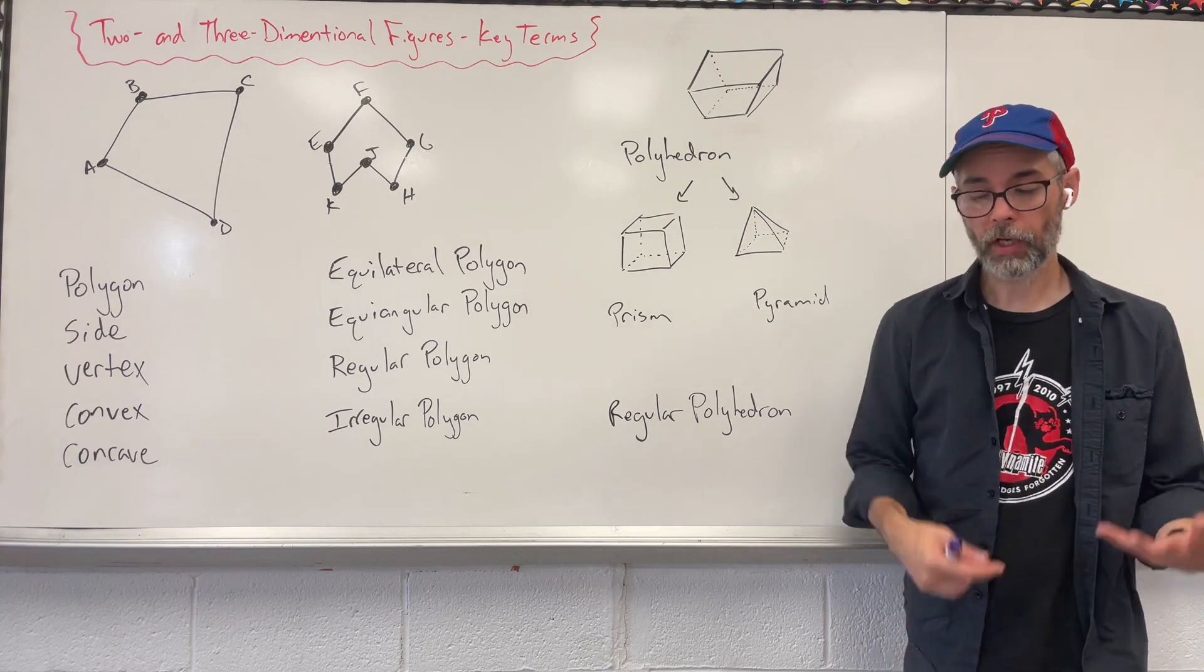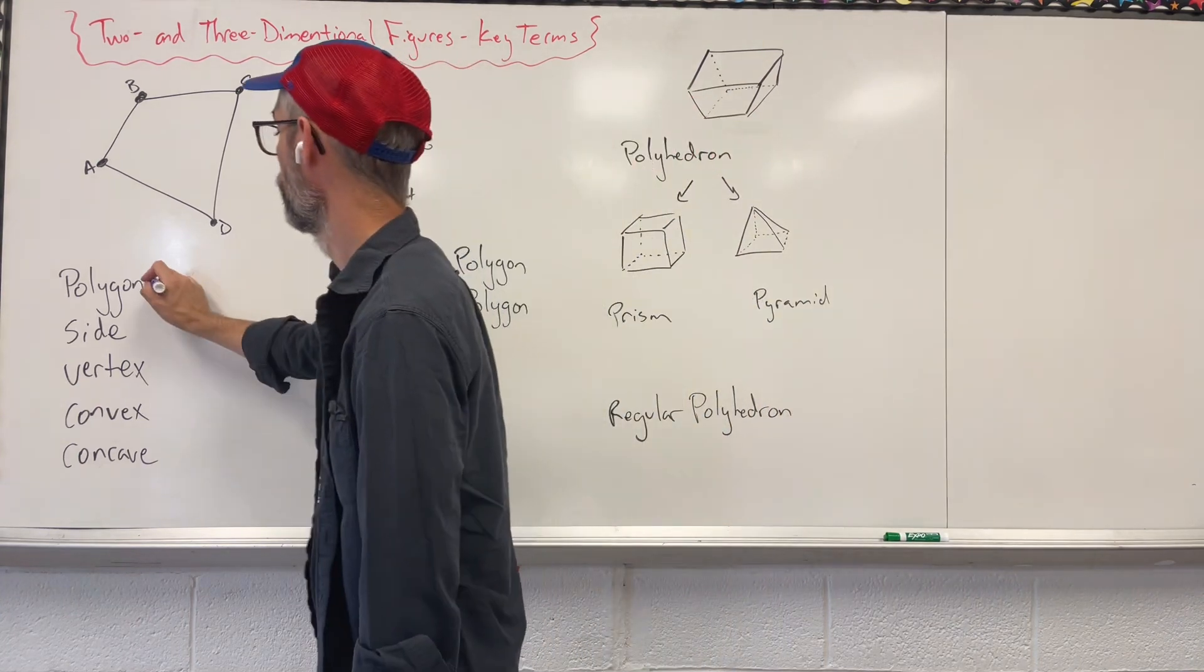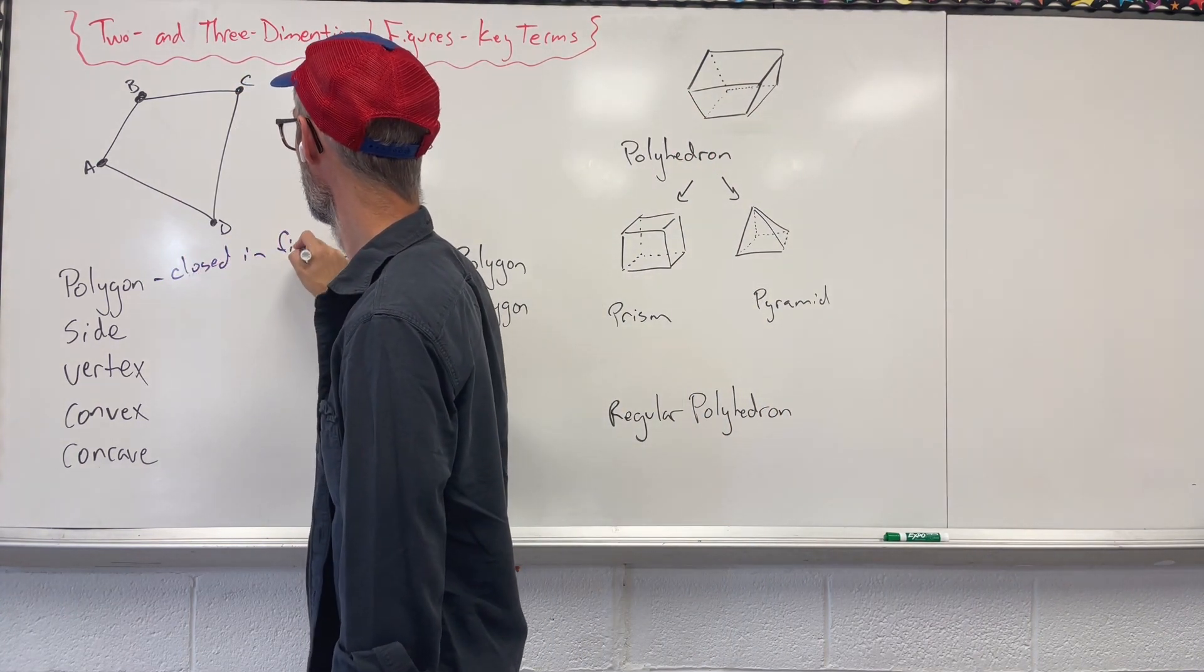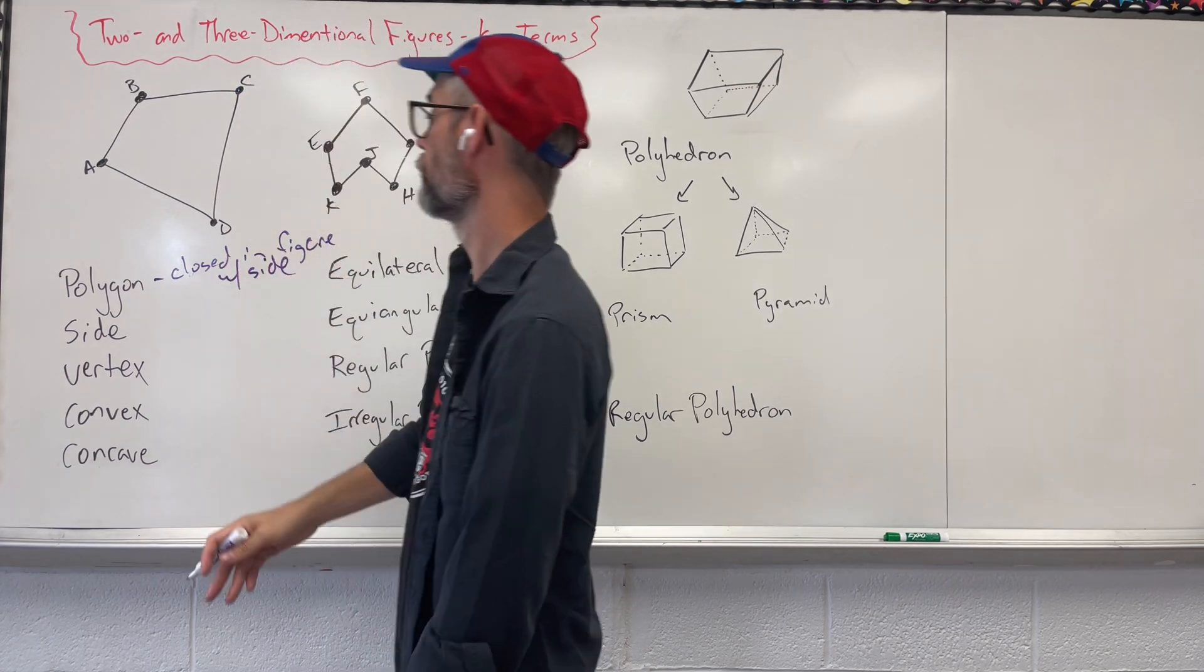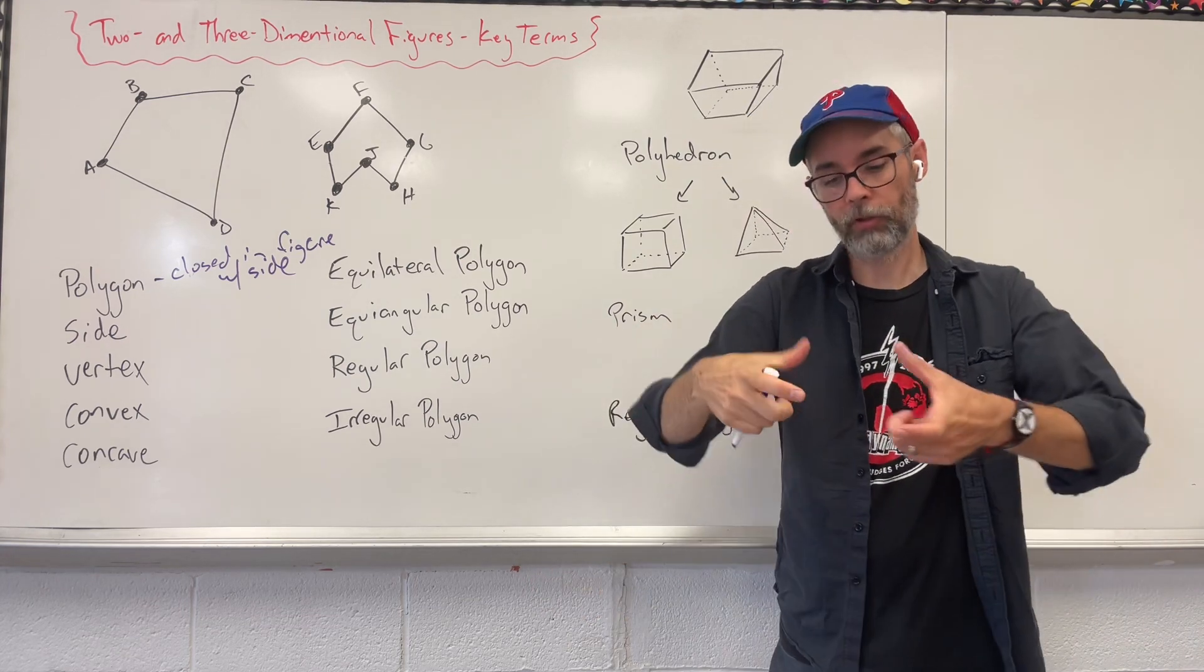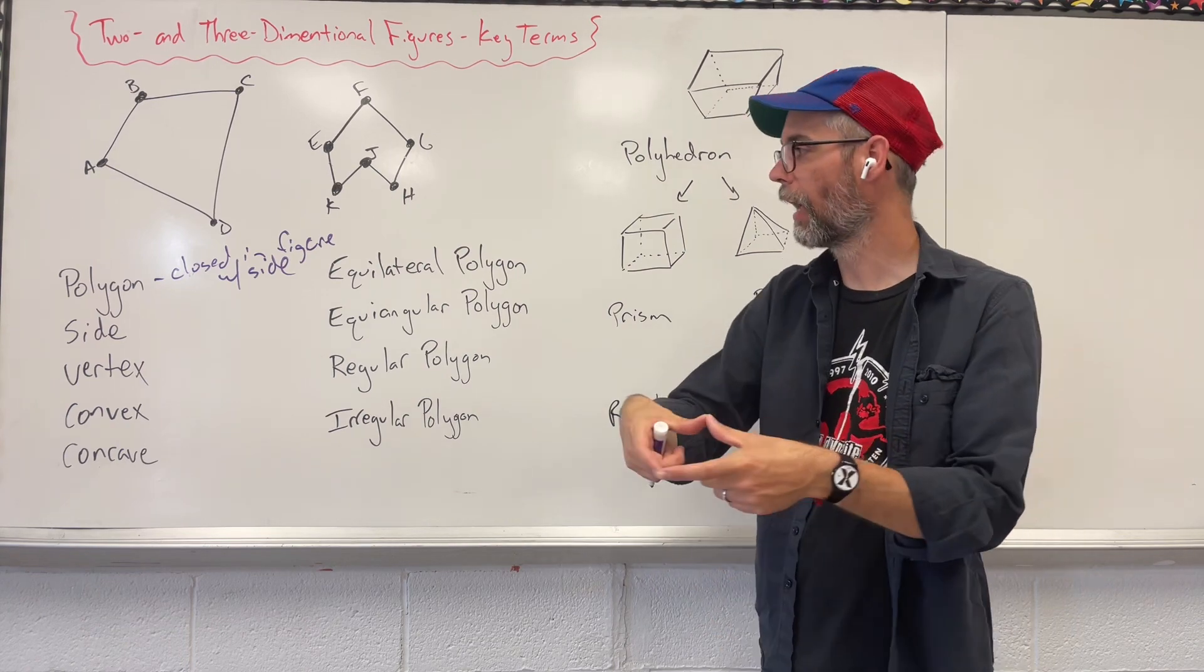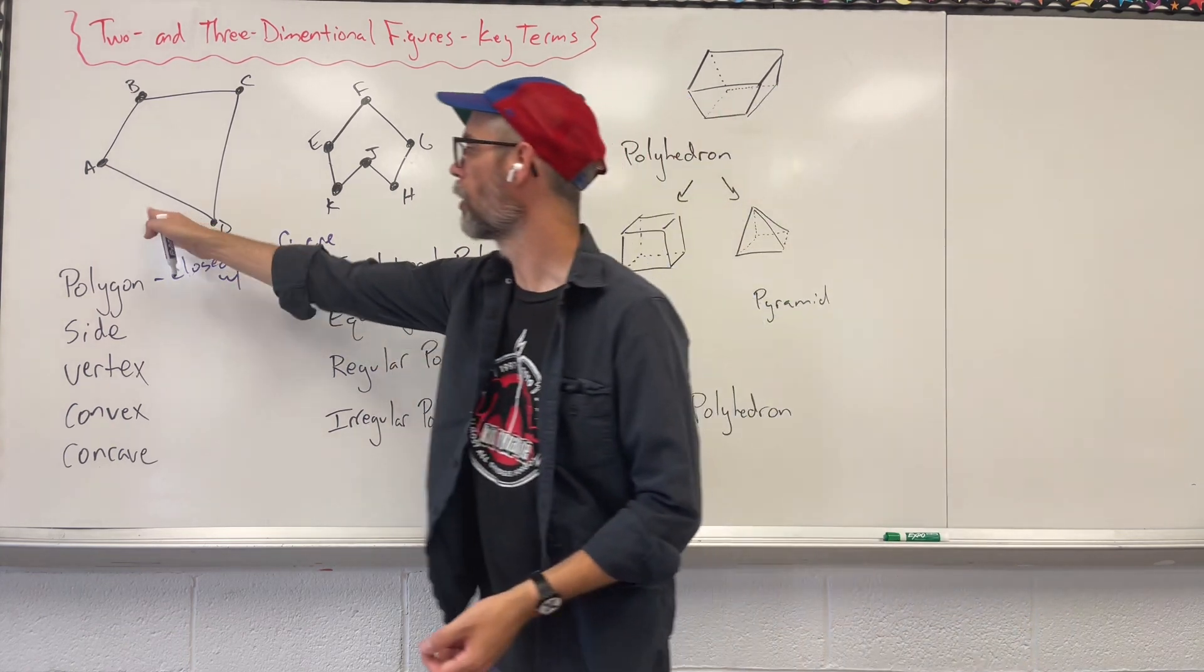So first thing is we have a polygon. A polygon is some sort of closed-in figure with sides. So you might ask isn't that everything? Not necessarily. A circle is not a polygon because it's a closed-in figure, yes, but it doesn't have sides that go along with it.